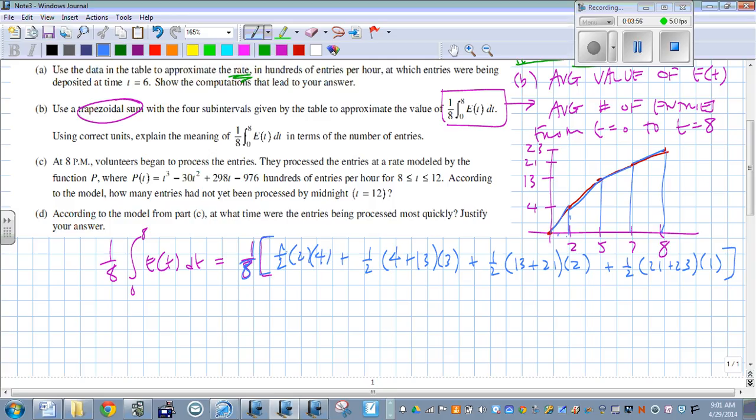So if we go ahead and multiply this all out, we should end up with 106.875. I know we usually round to three decimals, but this is an exact answer. So this is our average number of entries from t equals 0 to 8 in hundreds.